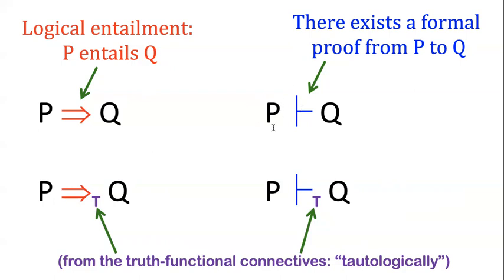So imagine this is like a tiny little proof bar pointing toward the q. What it says is there is a formal proof in bool or in prop from the premise p to the conclusion q. And when we subscript it with a t, what it means is that is only using the rules of truth functional logic, like our truth functional connectives.